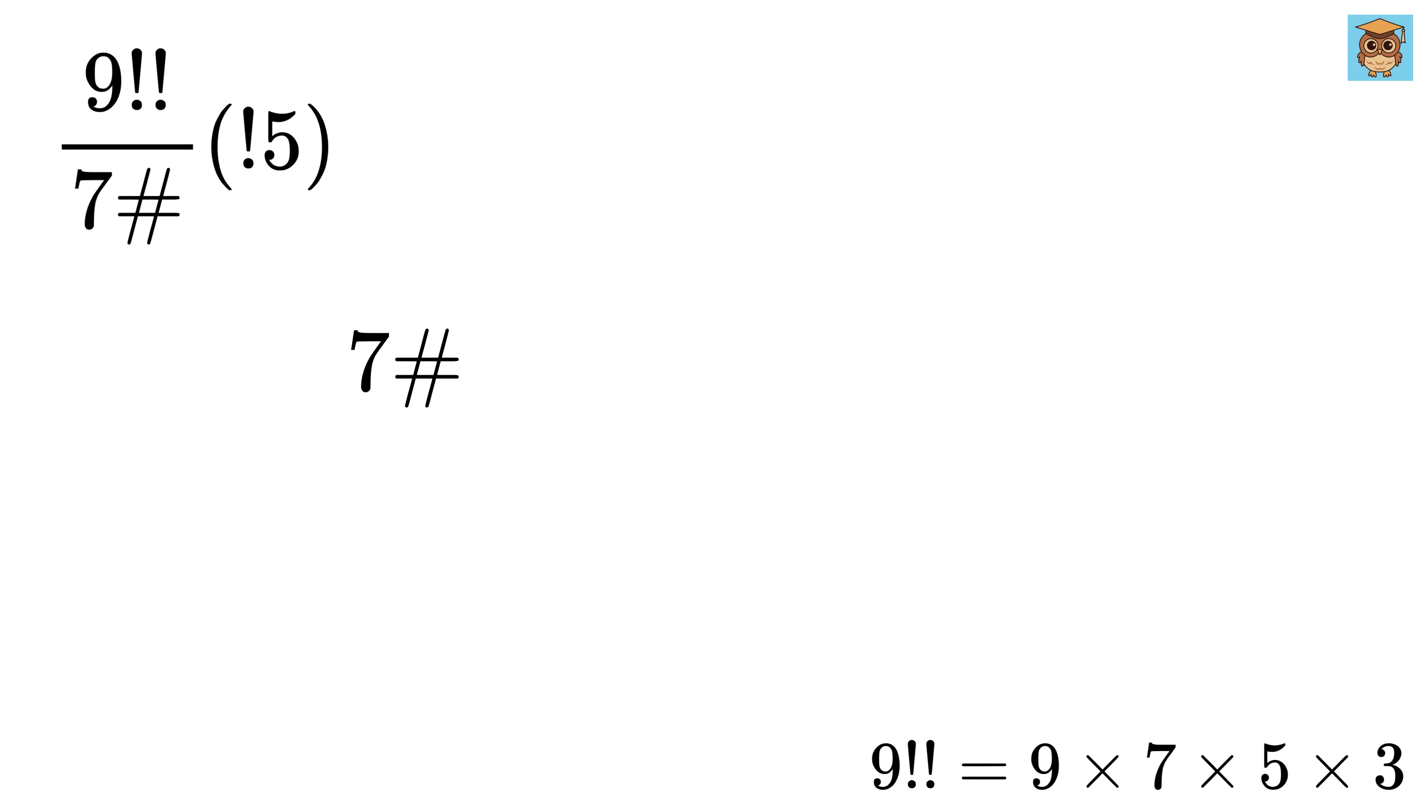Next, we look at 7 with a hash sign, called a primordial. This means we multiply all prime numbers up to 7. The primes up to 7 are 2, 3, 5, and 7. So, we do 2 times 3 times 5 times 7.